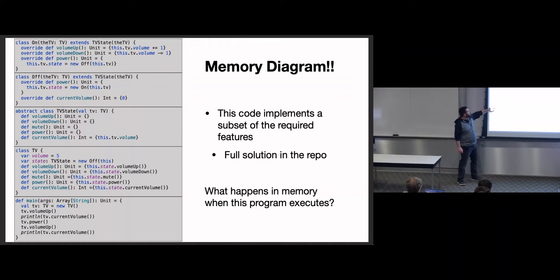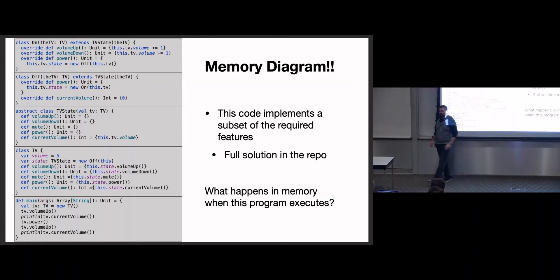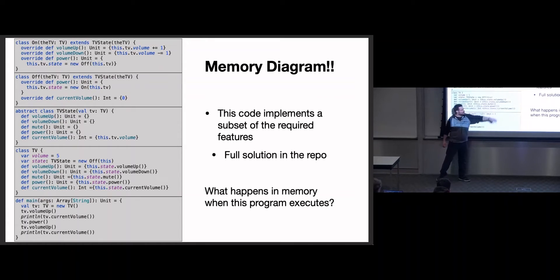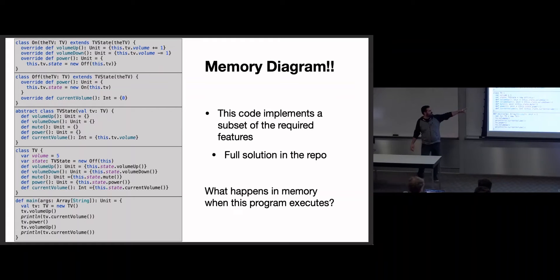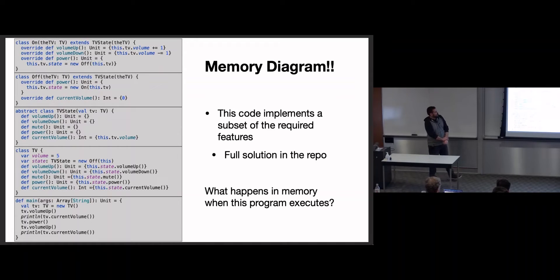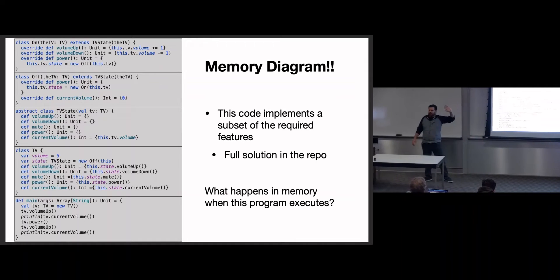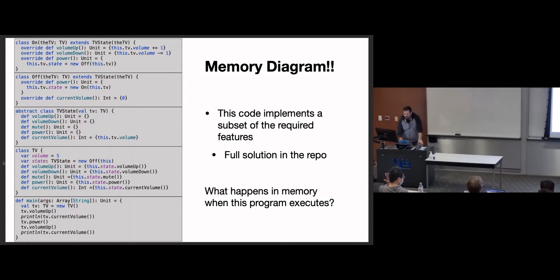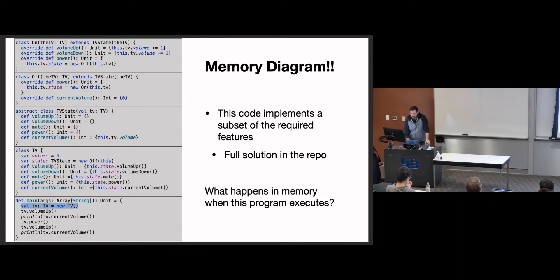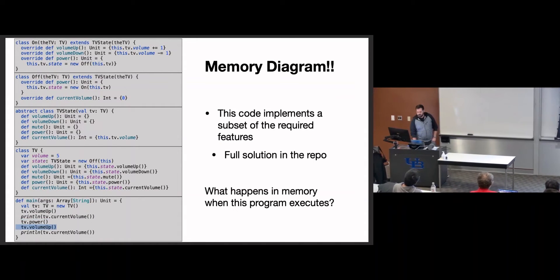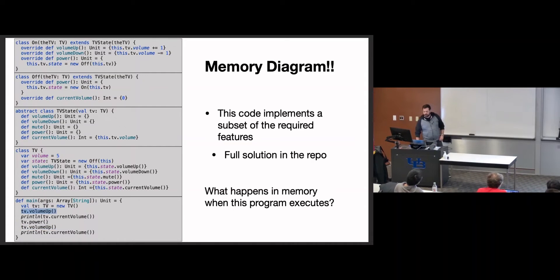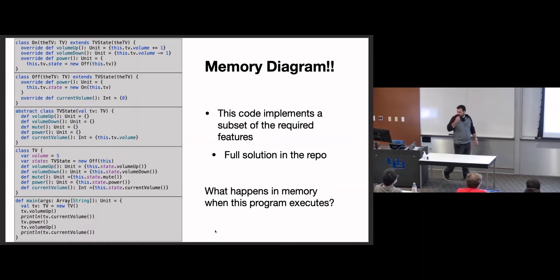I eliminated the mute state completely for this example — we're just going to have power on and off. We're going to create a TV, hit volume up, check the volume, hit the power button (which we expect to trigger a state transition to the on state), hit volume up again (which should actually do something this time), and then print out the current volume.